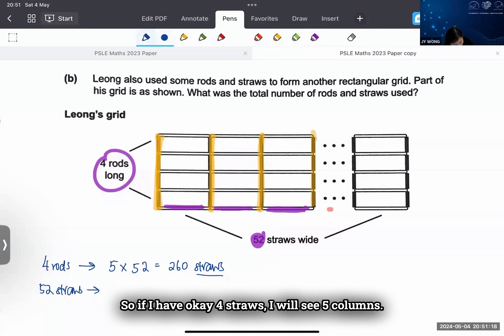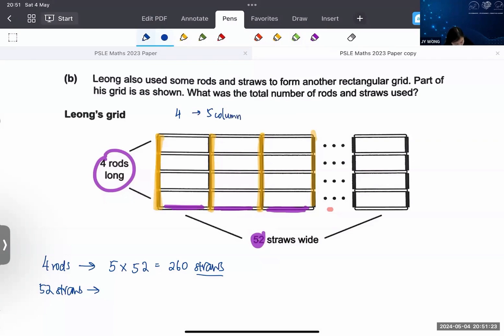So the pattern is always one more. So what do I know? 52 straws means that I will have 53 columns, and every column you can see that there are 4 rods.